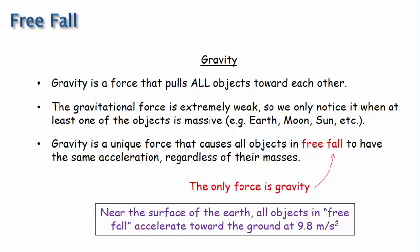One thing we should clarify about this statement is what is meant by near the surface of the earth. The fact is that gravity, and therefore the acceleration due to gravity, becomes weaker the farther the object is from the surface of the earth. However, the object still has to be quite far from the earth for its acceleration not to be 9.8 meters per second squared.